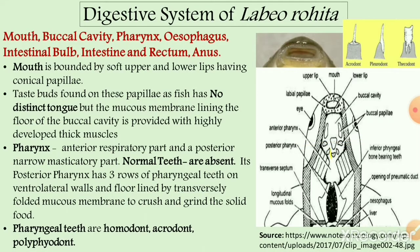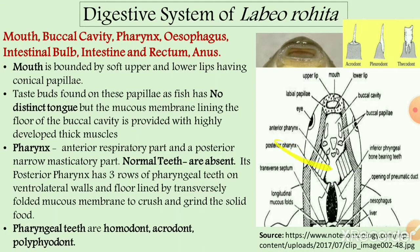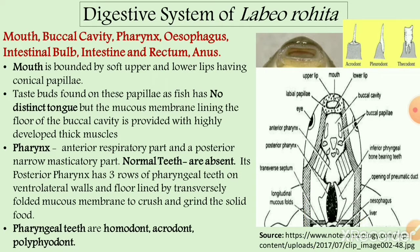The buccal cavity leads into the pharynx region. The pharynx is mainly divided into two parts: the anterior pharynx and the posterior pharynx. The anterior pharynx communicates with the branchial chamber and the gills, so its main function is respiration. The posterior pharynx is mainly associated with the mastication process.